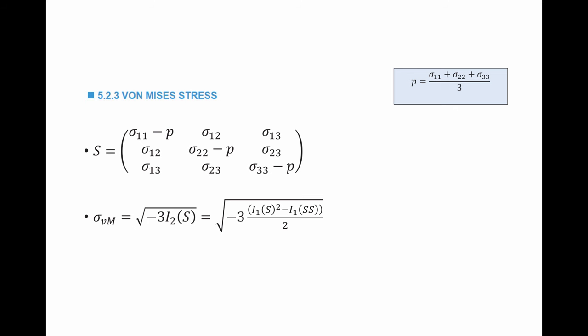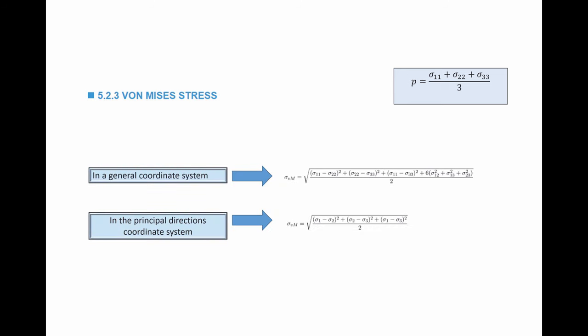The von Mises stress is the square root of negative 3 multiplied by the second invariant of S. The second invariant equals half multiplied by the first invariant squared minus the first invariant of S·S. Since the first invariant of S equals 0, we are left with the square root of (3/2) multiplied by the first invariant of S·S. Taking S times S, finding its first invariant, multiplying by 3, dividing by 2, taking the square root, and substituting P, yields a large equation as a function of all stress components.